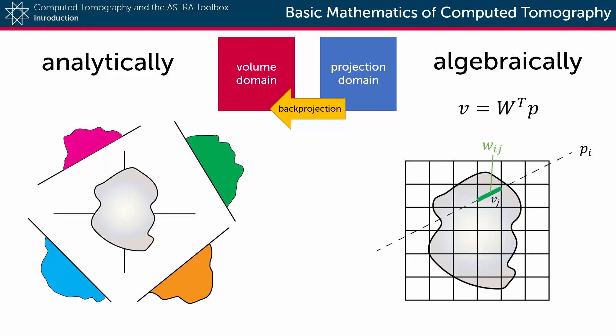In the algebraic case, back projection is defined by the multiplication of the transposed projection matrix—the same one that was used for the forward projection—with the vector of the projection data.